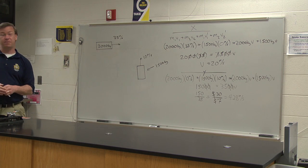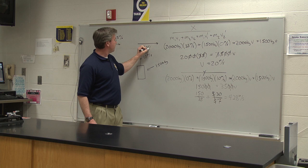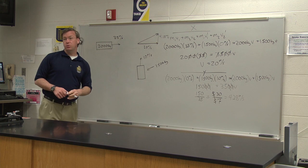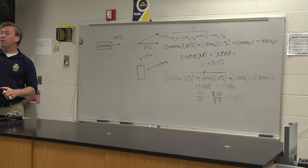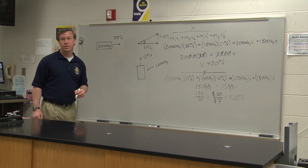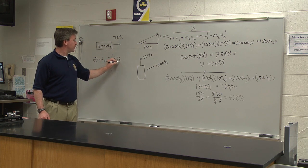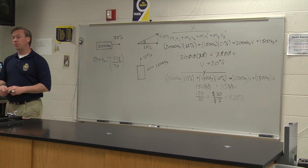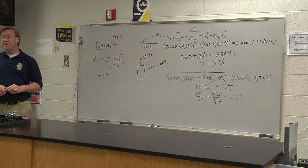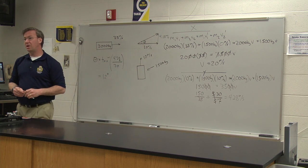We can combine these components back together: 20 m/s in x and 4.28 m/s in y. To find the angle, we take the inverse tangent of 4.28 divided by 20. Putting that into the calculator gives about 12 degrees. So when these two cars collide and stick together, the angle they move off in will be about 12 degrees.